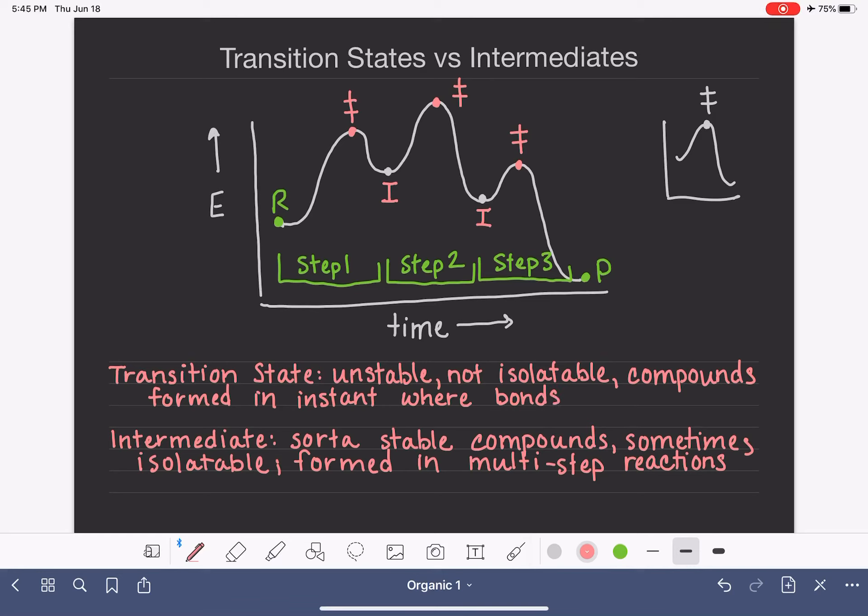So sometimes for some reactions, this means that bonds are breaking. Sometimes it means bonds are breaking and forming at the same time. So the transition state is this thing that is created in the exact instant that a bond is being made or a bond is being broken.